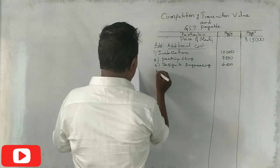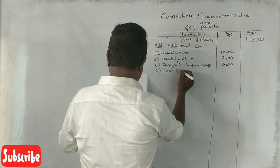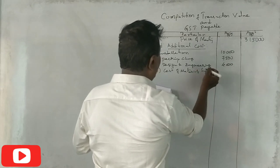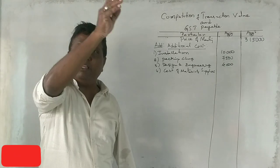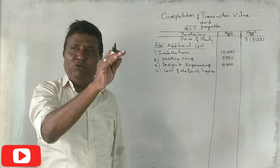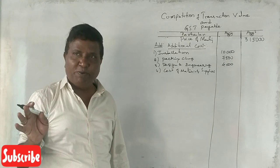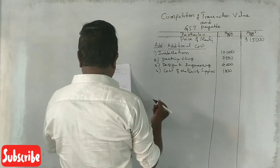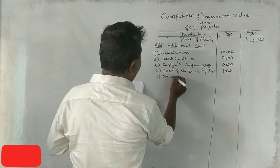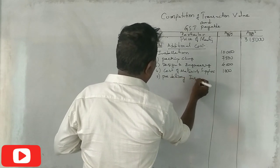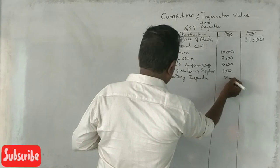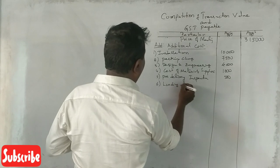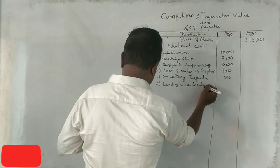Cost of materials supplied by the buyer: this is a supply from the dealer in Mumbai to the manufacturer in Mysore, so it is includible — Rs. 1,000. Pre-delivery inspection charges: Rs. 500. Loading and unloading charges: Rs. 600.